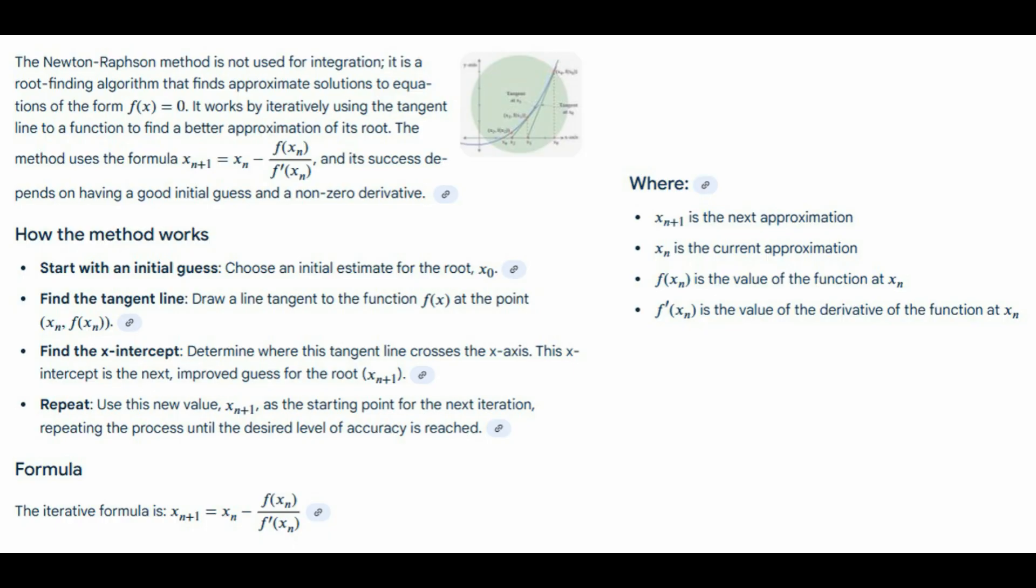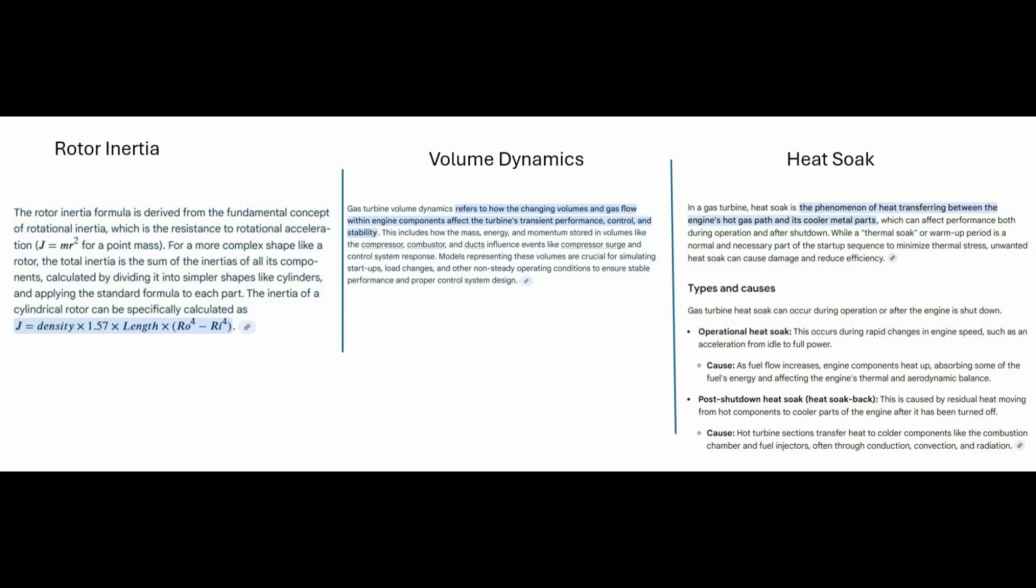Now, this is where it gets really interesting - modeling how the engine changes state. Accelerating, decelerating, transients. You said it's a fight against inertia. It absolutely is. And there are three key types of inertia, all interacting, that create that lag you feel when you push the throttle forward. The most obvious one is rotor inertia - just the sheer physical mass, the rotational inertia of all the spinning parts, the shafts, the discs, the blades. Takes time to spin all that metal up. That dictates the main mechanical lag, the dN/dt, the rate of change of speed. It's the heavy weight in the system, mechanically speaking.